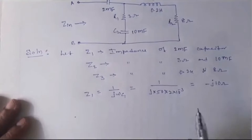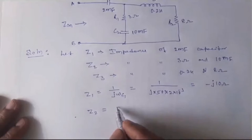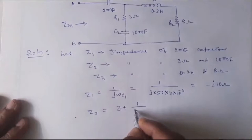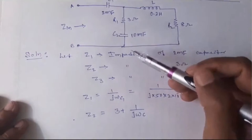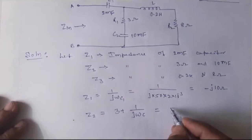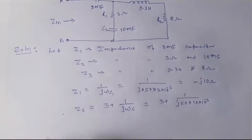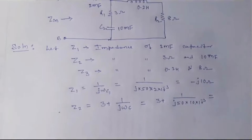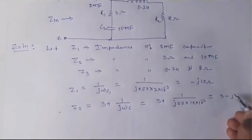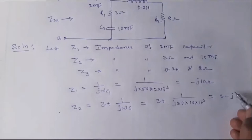Similarly, Z2 equals 3 plus the reactance of capacitor C2, which is 1/(j·ω·C). So Z2 equals 3 plus 1 divided by j×50×10×10⁻³, because C2 is 10 millifarad. Calculating this gives Z2 equal to 3 minus j2 ohm.